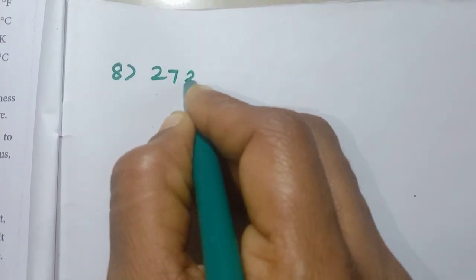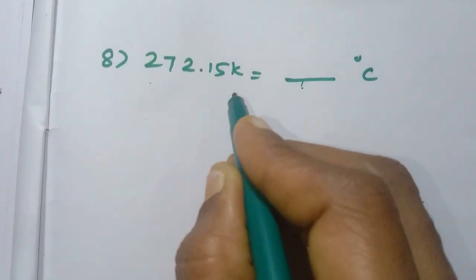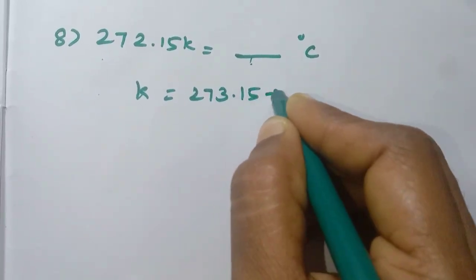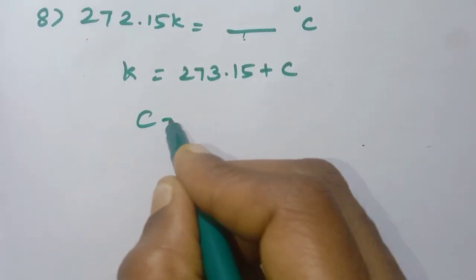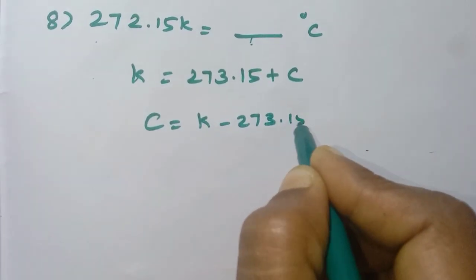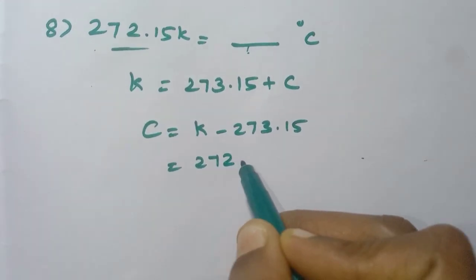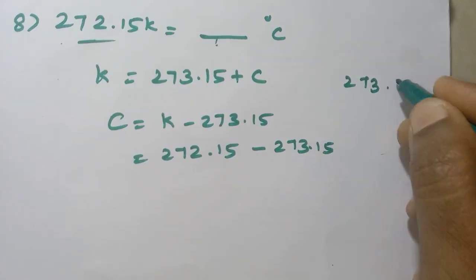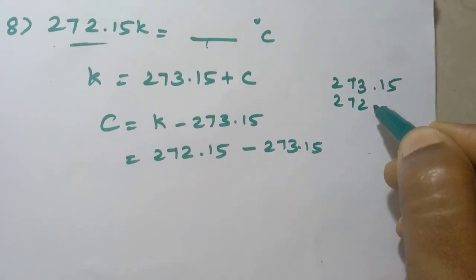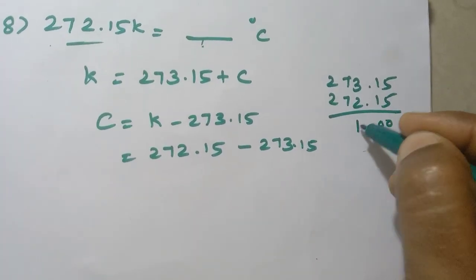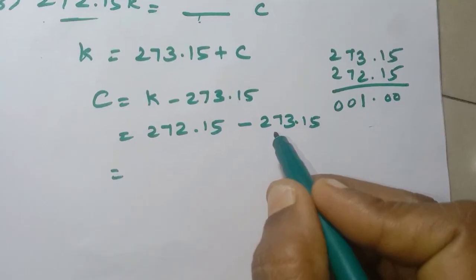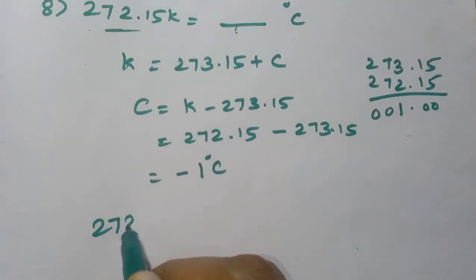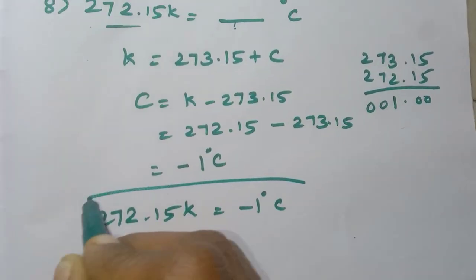Eighth problem: 272.15 Kelvin equals how many degrees Celsius? Using C equals K minus 273.15, substituting K equals 272.15: 272.15 minus 273.15. The bigger number is being subtracted, so the answer is minus 1. Therefore 272.15 Kelvin equals minus 1 degree Celsius.